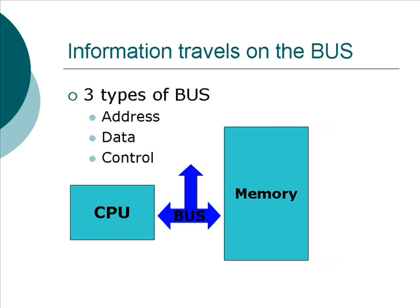The address bus specifies what address in memory you're trying to read from or write to. The data bus carries the data that's actually going to or coming from memory or some other peripheral. The control bus contains things like the clock signal and indicates which memory chip or input-output device you're talking to. The address is then the address inside that chip that you're trying to access.